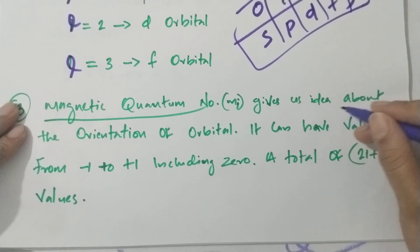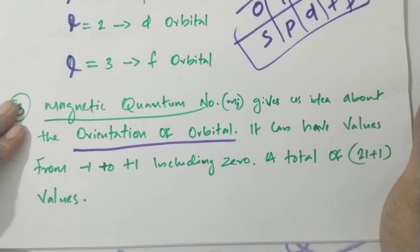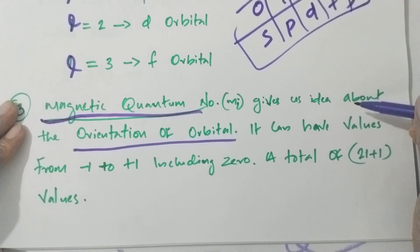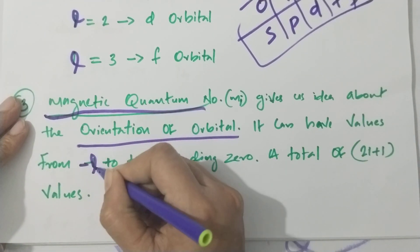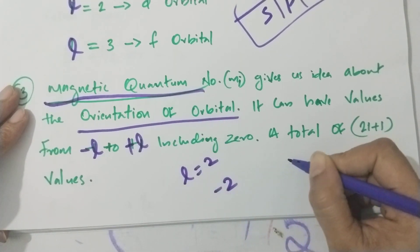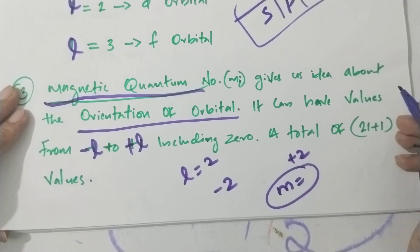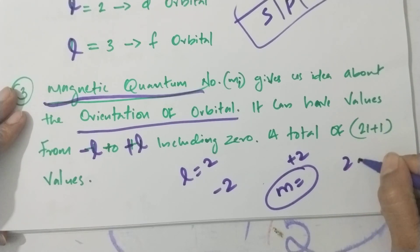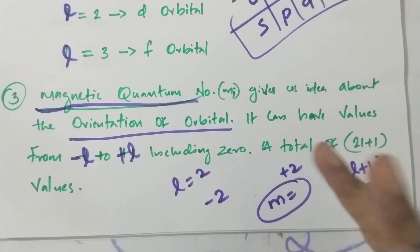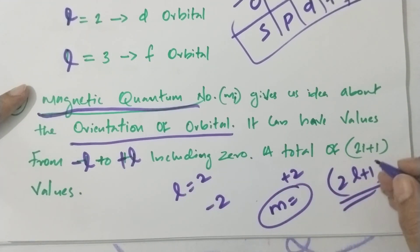The magnetic quantum number gives us an idea about the orientation of the orbital. The values range from minus l to plus l. For example, if l equals 2, the values go from minus 2 to plus 2. The total number of orbitals is given by 2l plus 1.